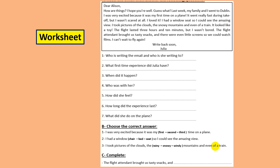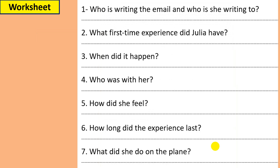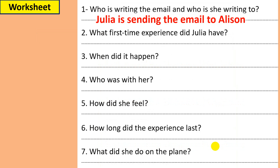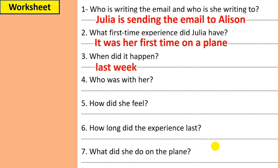Now let's see. Question number one: who is writing the email and who is she writing to? You already have this in your student book, page 31. Julia is sending the email — that's right. Question two: what first-time experience did Julia have? For sure it was her first time on a plane. Number three: when did it happen? It happened last week. Number four: who was with her? Her family. So what we are doing now is discussing and trying to find specific information from the email.